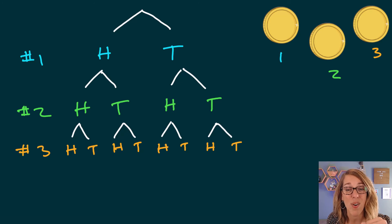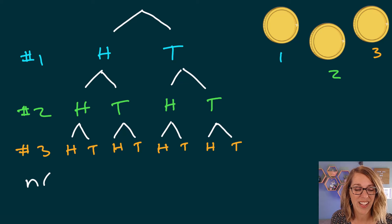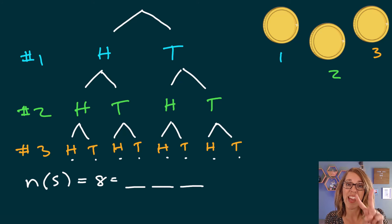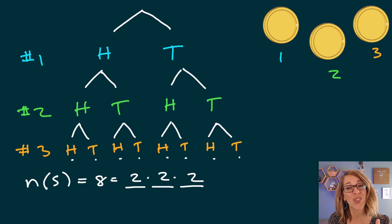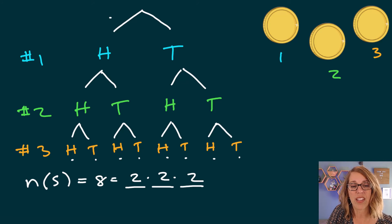I can find the number in the sample space by counting the ends of my branches — that gives me eight. It's no coincidence: three coins each with two possible outcomes, and two times two times two equals eight. Using the probabilities on my branches is an easier way to compute probabilities than writing out the full sample space. Each coin flip has a one-half or 0.5 probability.